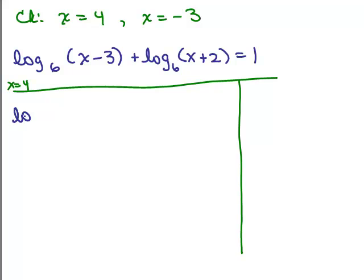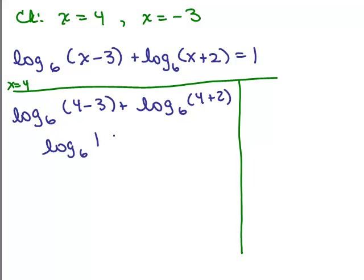So I have log base 6 of 4 minus 3 plus log base 6 of 4 plus 2. So this gives me log base 6 of 1 plus log base 6 of 6. Now what's the log of 1? It's always 0, because anything, any base that's positive to the 0 power equals 1. And what's the log of 6 base 6? Remember when these numbers are the same, it's got to be 1, because 6 to the first power will equal 6. So you have 0 plus 1 is 1, and that is what was on the right side. So that means that 4 is definitely a solution. It checked.